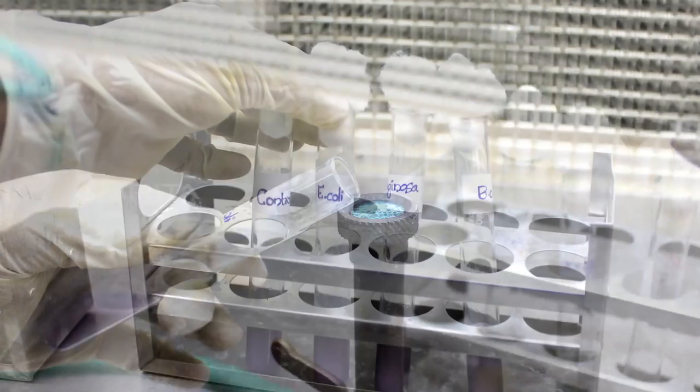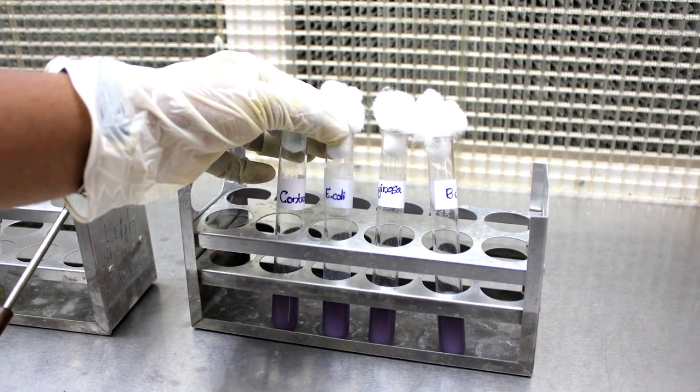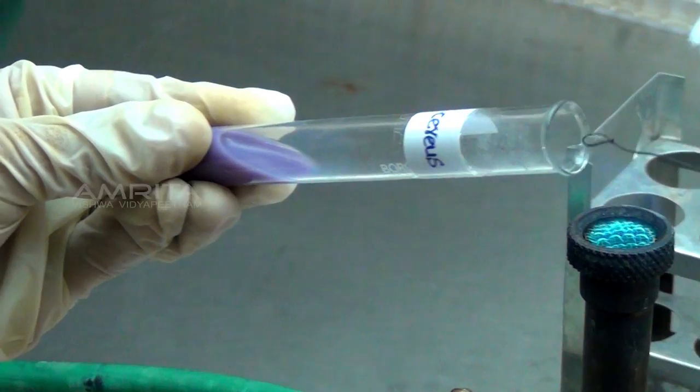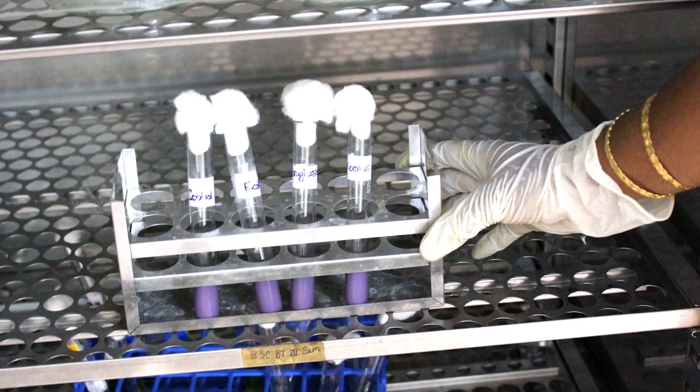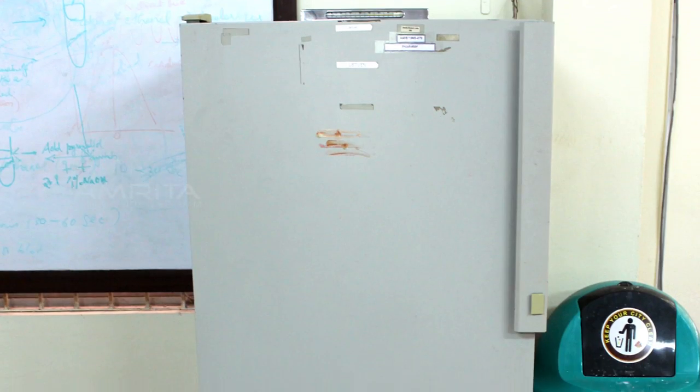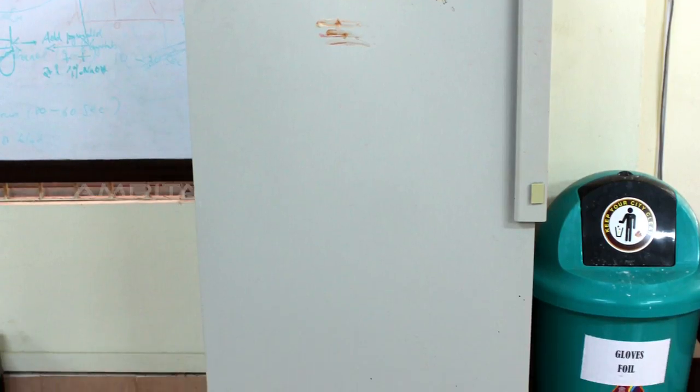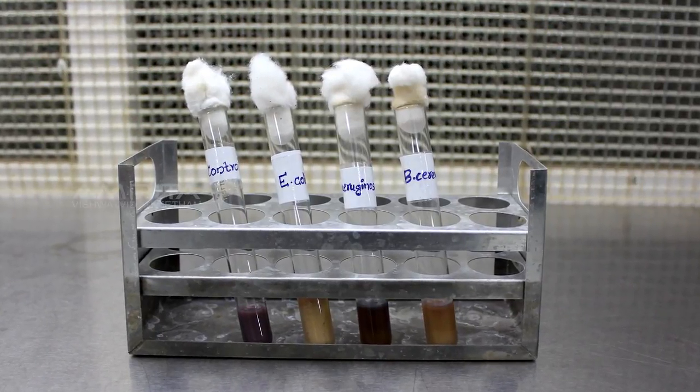Flame the mouth of the tube and place it in the rack. The other two test cultures were inoculated successively. Incubate the tubes at 37 degrees celsius for 24 to 48 hours. After incubation observe the results.